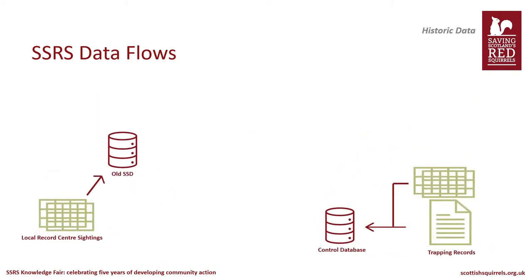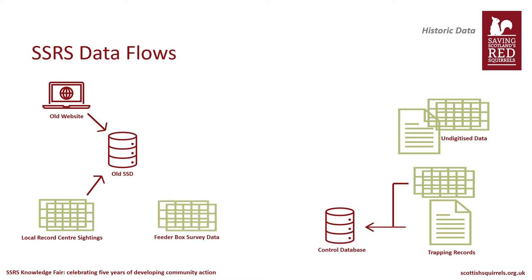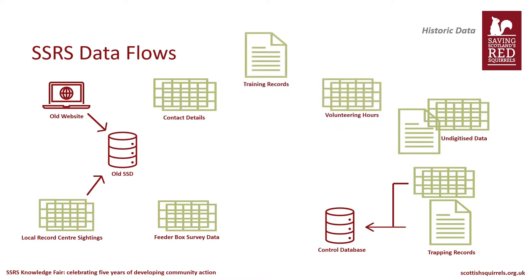Prior to the Hub, trapping records were imported to our old control database. However, a lot of data was unprocessed and remained in a variety of formats such as scanned PDFs, Word documents and spreadsheets. Sightings from local record centres were uploaded to the old Scottish Squirrel database, which also contained public sightings from our old website. We had more disparate recording systems for feeder box survey data and volunteering information including contact details, training records and volunteering hours. Our data was spread across multiple parallel and overlapping recording systems, making it difficult to access and retrieve information.